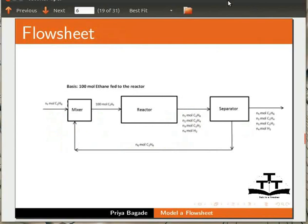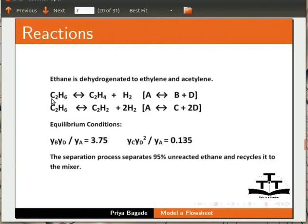We will model the three components of this flowsheet: mixer, reactor, and separator. We will then assemble them to model the complete flowsheet. Here, ethane is dehydrogenated to ethylene and acetylene in the following pair of reactions. The equilibrium conditions are also given as follows, where yi signifies mole fraction.